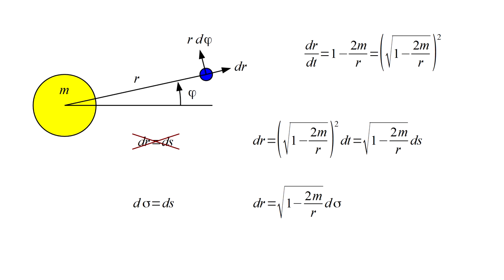That is, not only do the two observers disagree on time measurement, but they also disagree on distance measurement. Local distance measurement in the altitude or r direction is larger than perceived by the distant observer by one over the Schwarzschild factor.